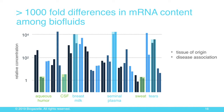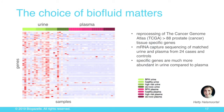I want to provoke your thoughts: plasma may not always be the best fluid, depending on the disease you're studying. From matched urine and plasma from prostate cancer patients, we clearly document that prostate cancer or prostate-specific RNAs — collected from the TCGA databases — show much higher RNA concentration in urine compared to plasma, again controlled with spike-in molecules. So for some applications like prostate cancer, it makes more sense to look at urine compared to plasma.